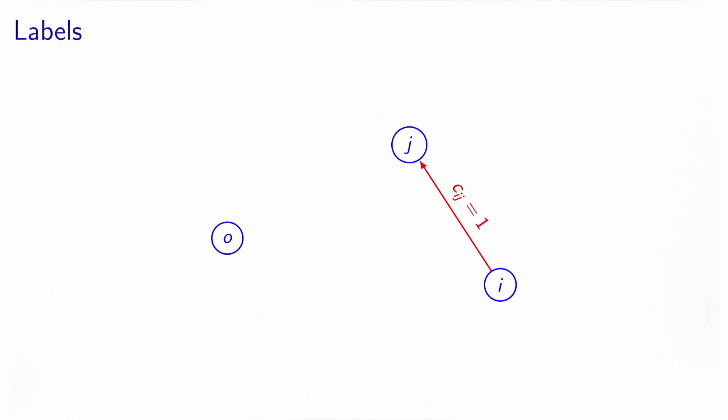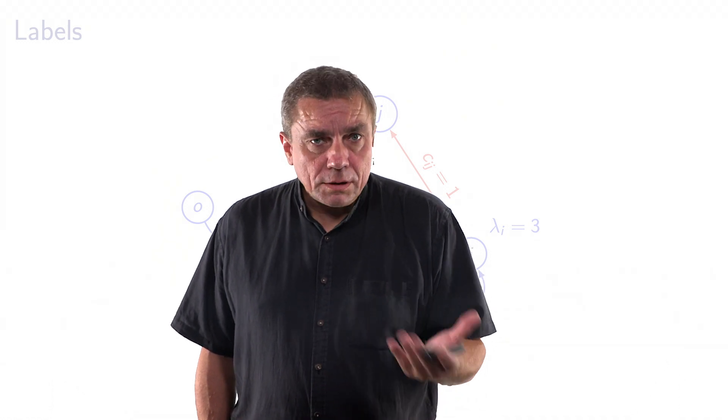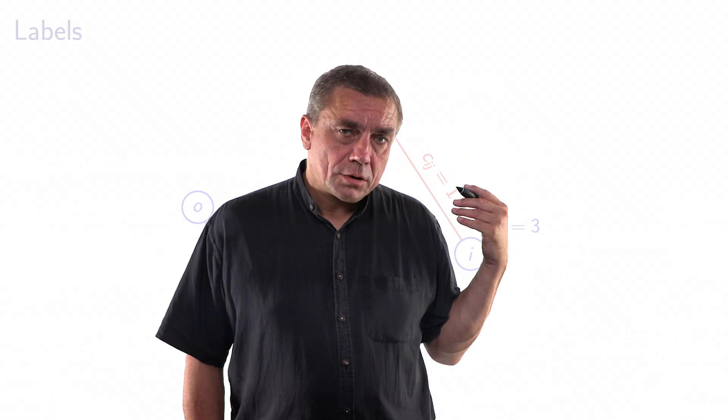Let's consider an example. We have this arc ij with a cost which is 1. The label of node i is equal to 3. The interpretation that we give to this value of the label is that the algorithm in a previous iteration has